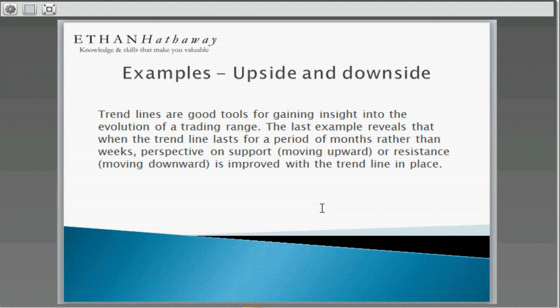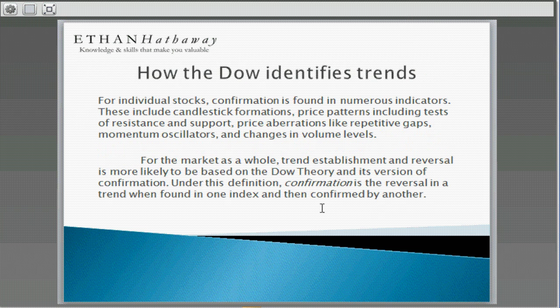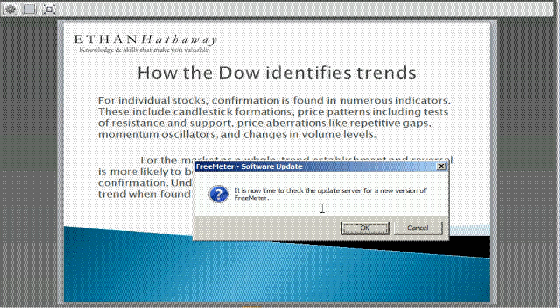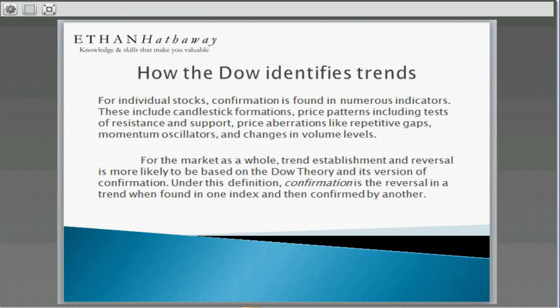The Dow Theory is based on identification of trends. On a broad basis, how do you use the Dow to identify trends for individual stocks? Confirmation is found in many different indicators including candlesticks, tests of resistance and support, price operations like repetitive gaps, momentum oscillators, and changes in volume level. For the market as a whole — the genesis of trend analysis — the Dow Theory always rules. Under its theory of confirmation, you need a reversal found in one index and then confirmed in another. A popular example is a reversal seen in the Industrial Averages confirmed by the Transportation Averages.